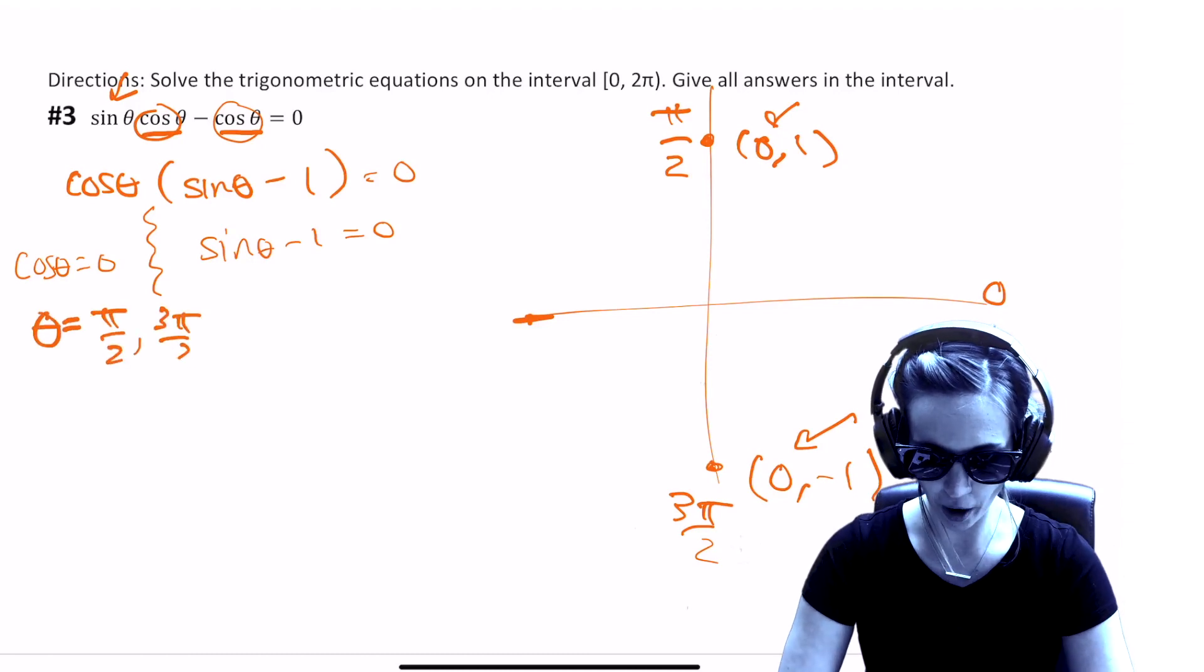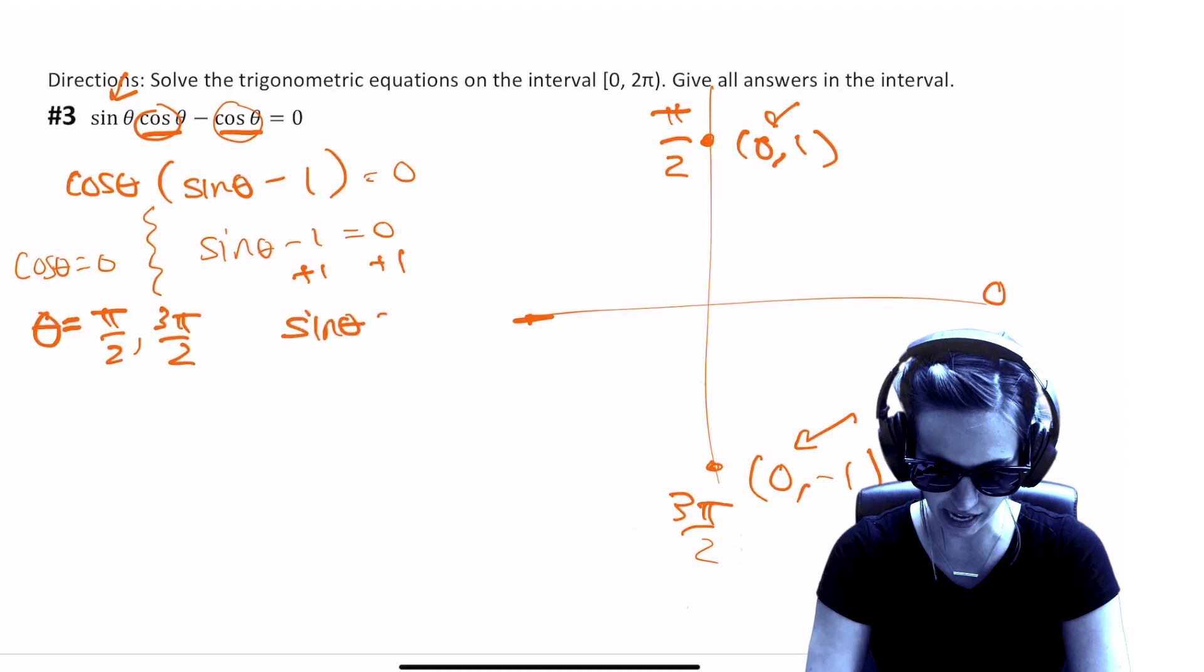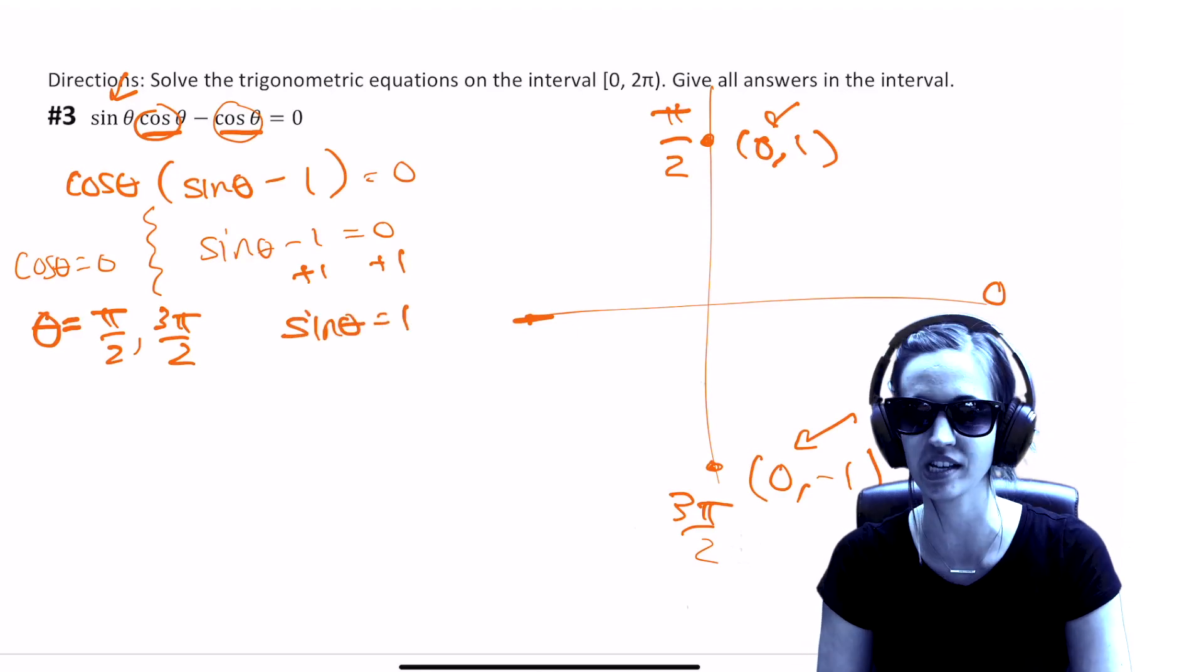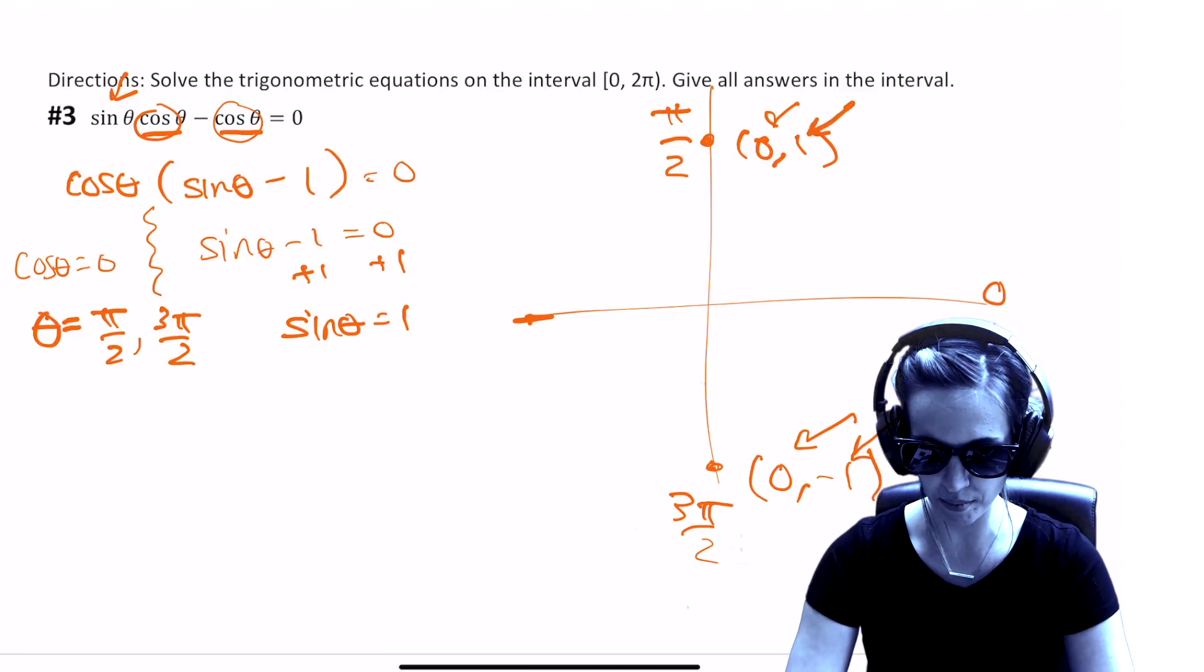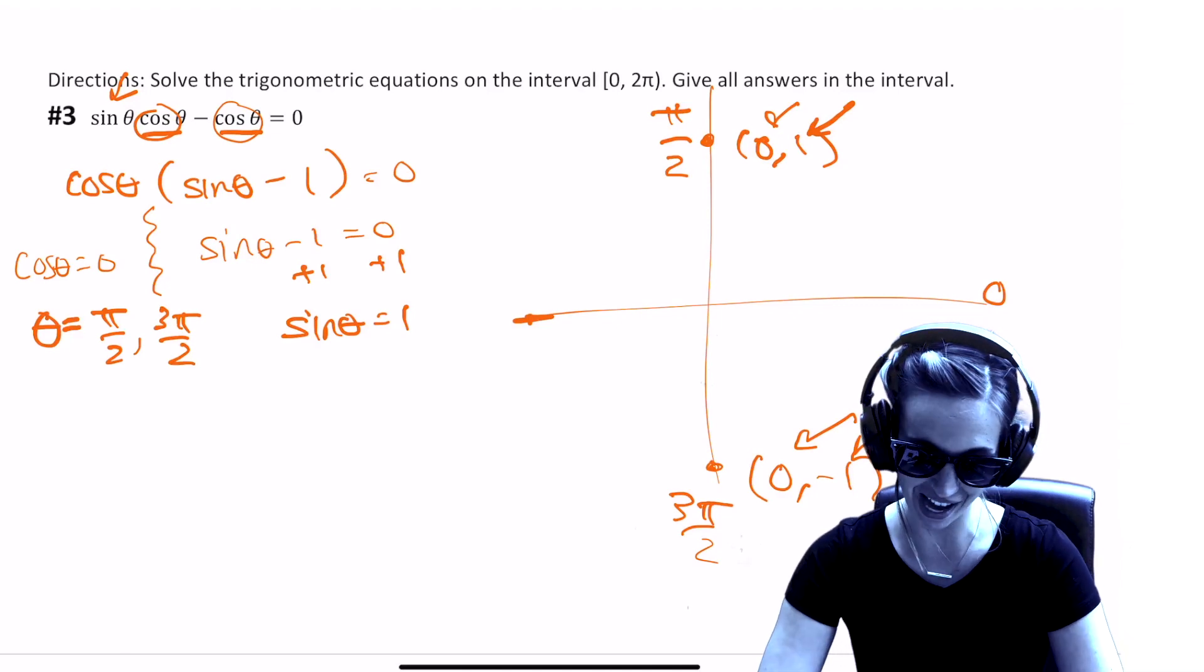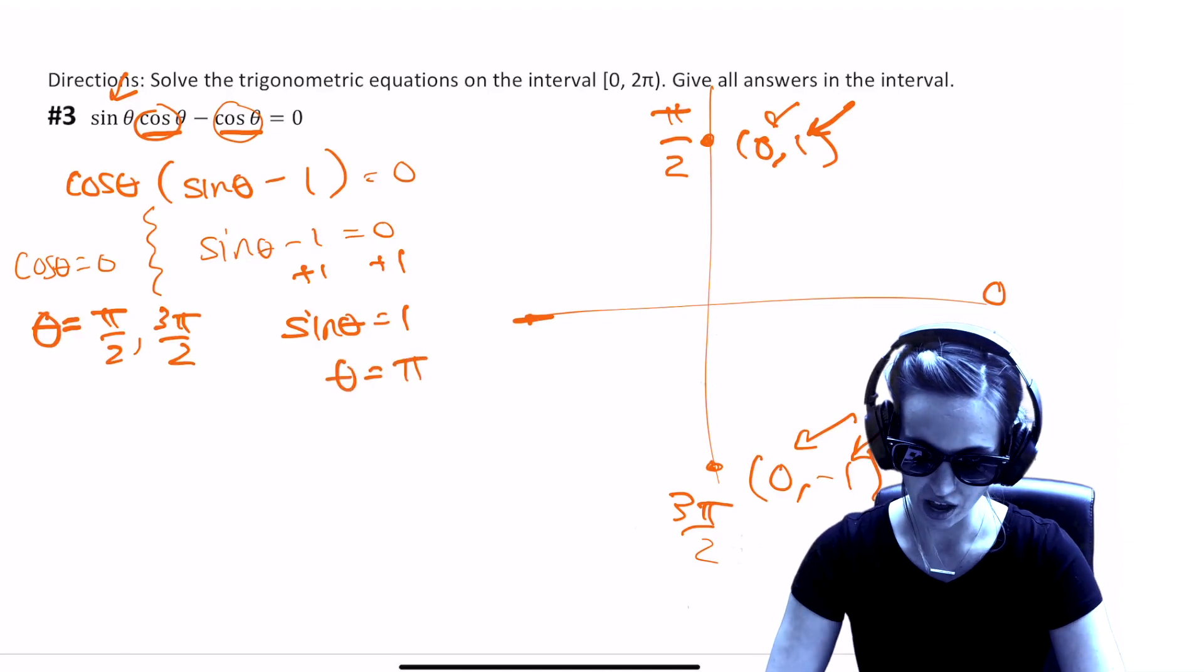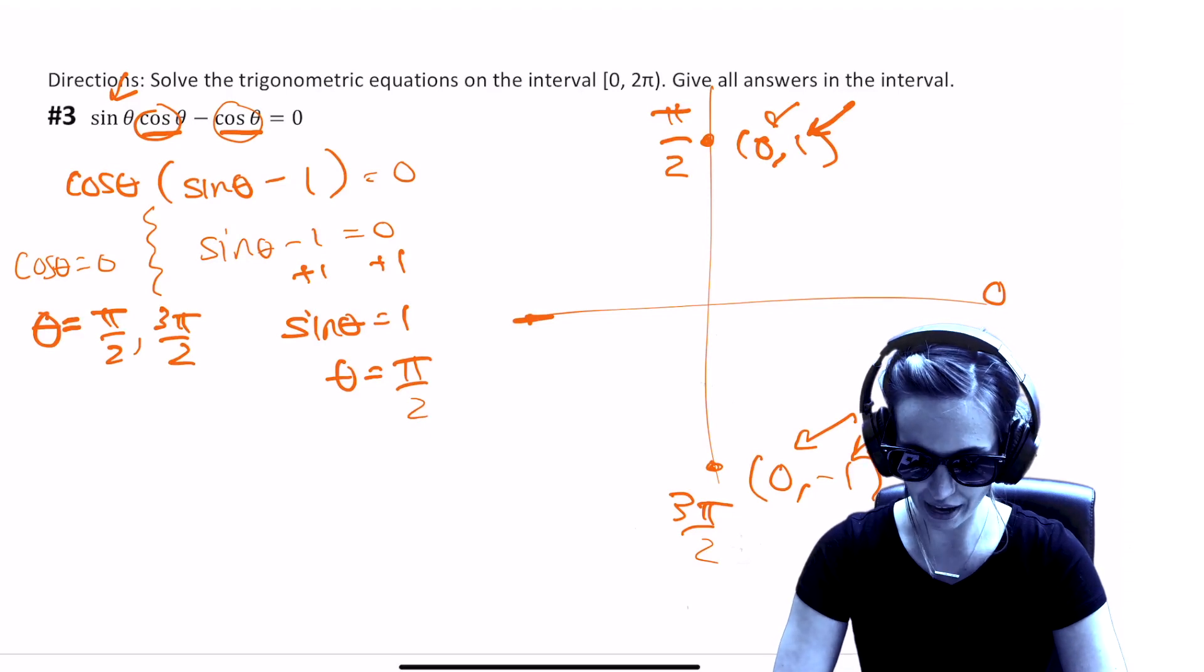Alright, there's still one more part. Sine theta minus one equals zero. Add the one to the other side to isolate the trig function. Sine theta equals one. Where does sine equal one? Sine's the y coordinate. Right here, that coordinate is zero comma one. And then down here, this coordinate is zero comma negative one. Sine is the y coordinate. Sine theta is positive one up here, but not down here at three pi over two. So, theta would have to equal pi over two.